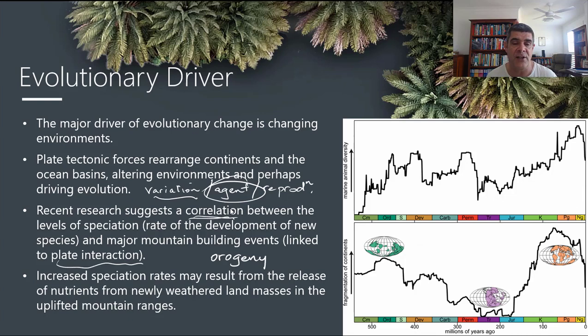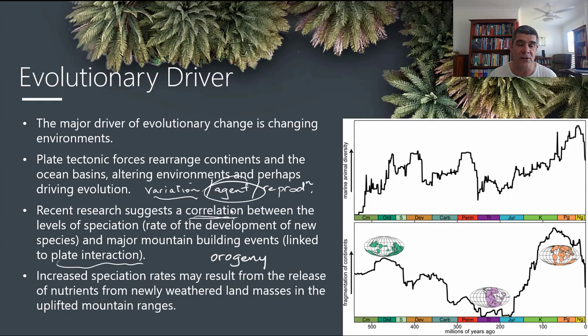We want to see how much evidence there is for the association between these different variables. The increase in speciation rates may be the result of release of nutrients from newly-weathered land masses and uplifted mountain ranges. The stirring of oceans, bringing nutrients from deep within the oceans up towards surface waters, may also be a contributing factor. Most of the diversity we're looking at initially is diversity that happened in the oceans — where we feel life began and diversified in key events like the development of the Ediacaran fauna and the great diversity of the Cambrian fauna.